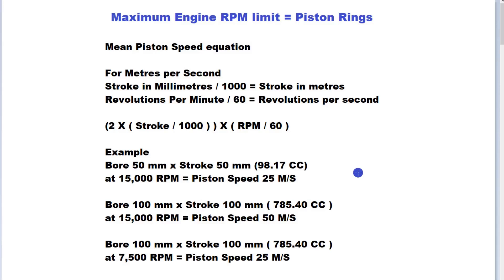We can work out the actual mean piston speed of our engine with a fairly simple equation. We have two times our stroke in meters, so we have to take the stroke in millimeters divided by a thousand to get a stroke in meters.